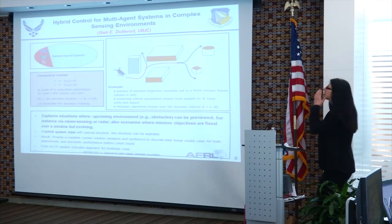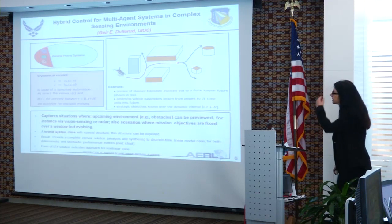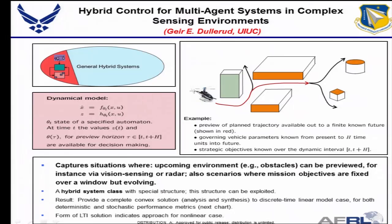Hybrid control formulation is one way of formulating multi-agent systems in complex sensing environments. You look at a discrete system — an automaton, which could be your decision variable — and its dynamics, its evolution, can be modeled in a continuous way. Suppose you want to do path planning for a vehicle: the goal is to go from point A to point B and avoid an obstacle.